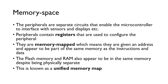These are memory mapped, which basically means they're all given an address in a continuous list, and they just appear to be part of the same memory as the instructions and the data. So the flash, the RAM, and the peripherals all appear to be in the same memory because they share this contiguous address space, despite being physically separate. This is known as a unified memory map.